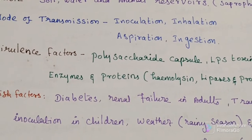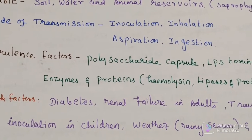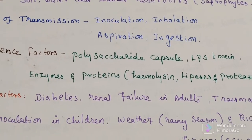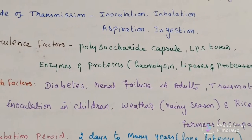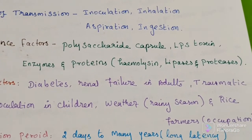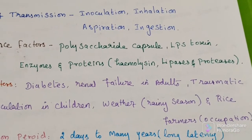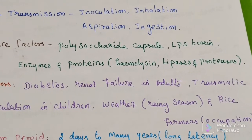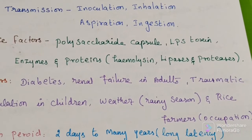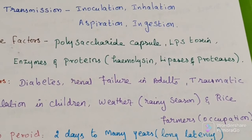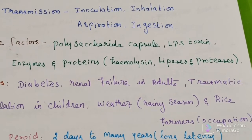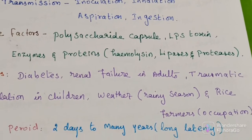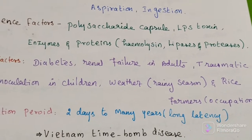Risk factors include diabetes and renal failure in adults, and traumatic inoculation in children. It is more commonly seen in the rainy season, and by occupation, rice farmers are at risk of inoculation.